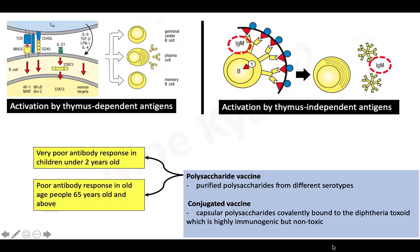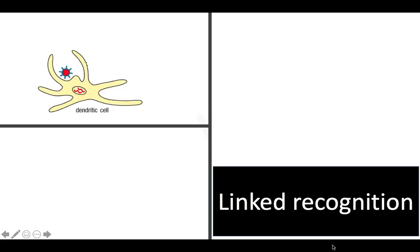Now let's move on to the principles of link recognition. The diagram shows a virus and a dendritic cell. The virus has an internal viral protein shown in red and an external viral protein shown in blue. When the virus is taken up by the dendritic cell, the dendritic cell processes it and presents the internal viral protein to a CD4 T cell via MHC class II, and the T cell becomes activated and differentiates into an effector T cell.